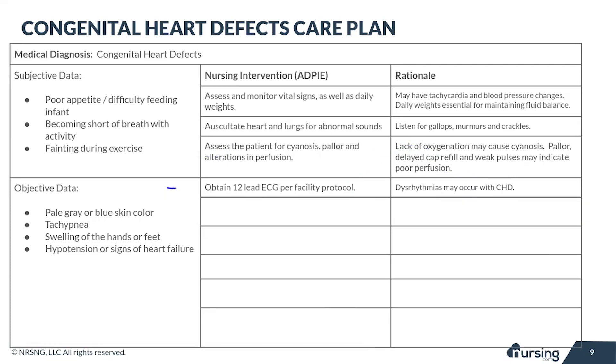You want to plan to get a 12-lead ECG per your hospital protocol. Dysrhythmias can occur with congenital heart defects, so it's really important to get a baseline.